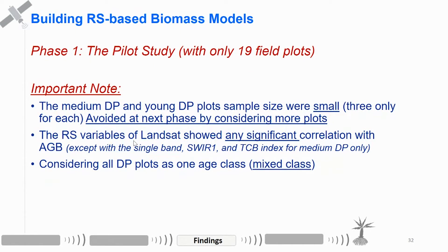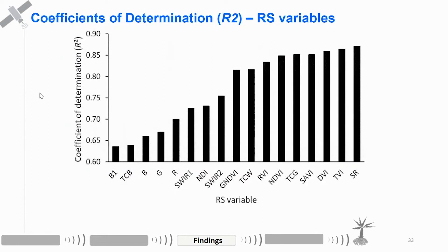This is an important note from what we learned in phase one — the pilot study with only 19 field plots. We found the sample size was very small, especially for the medium and young date palm age classes. The Landsat remote sensing variables showed little statistical significance. So we considered all the field plots as one class, which we call the mixed-age class. This figure shows how remote sensing variables correlate with R-squared, and it's easy to see that vegetation indices work better than the single bands.